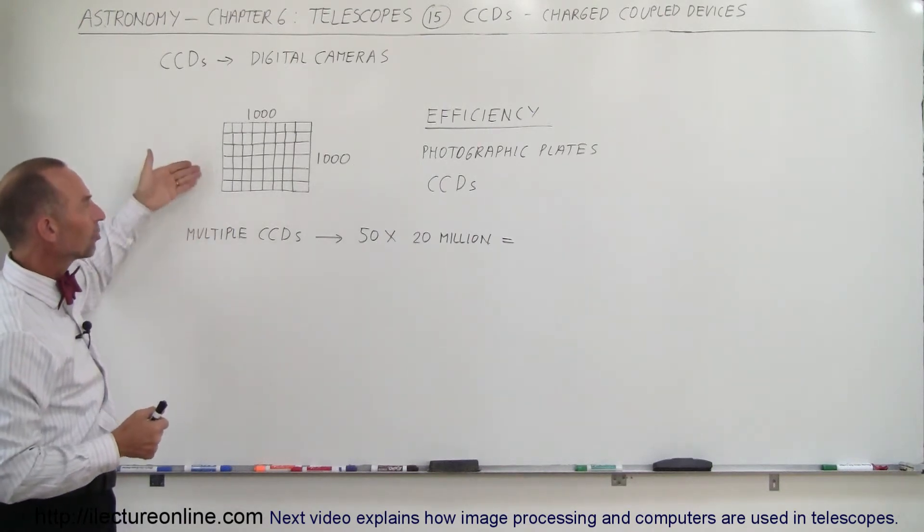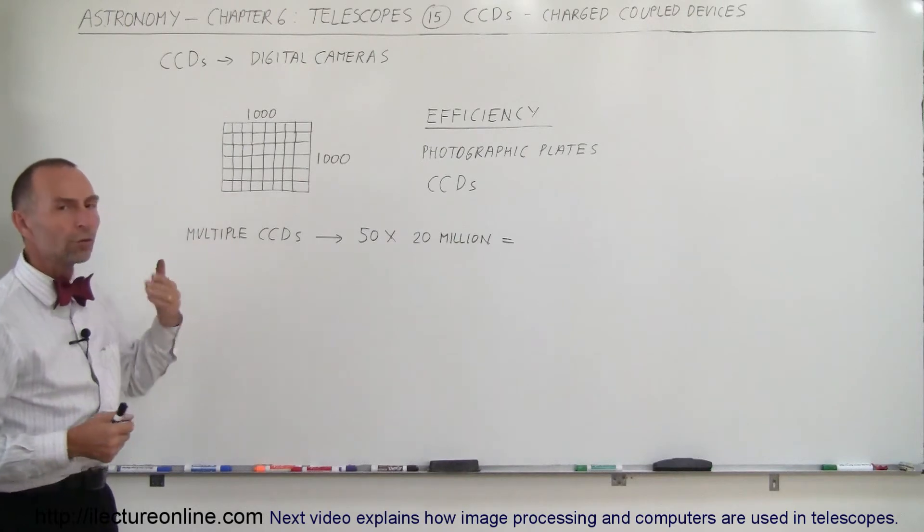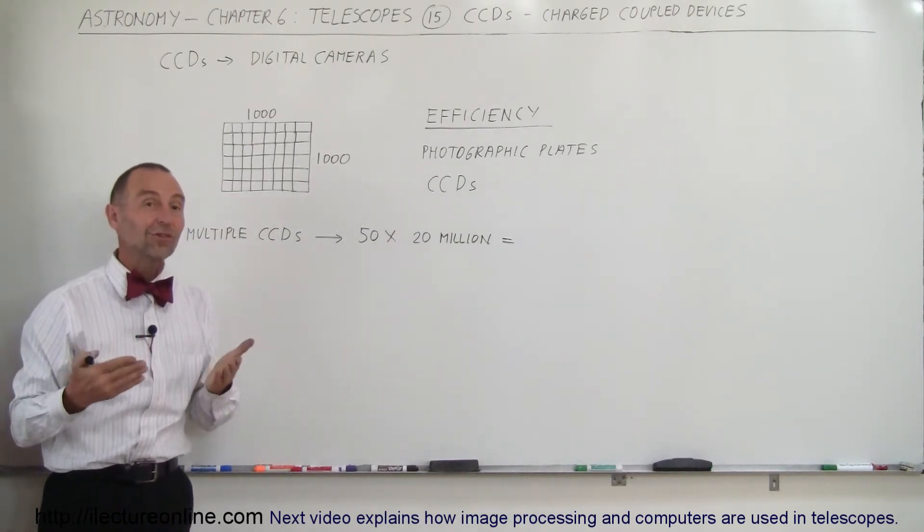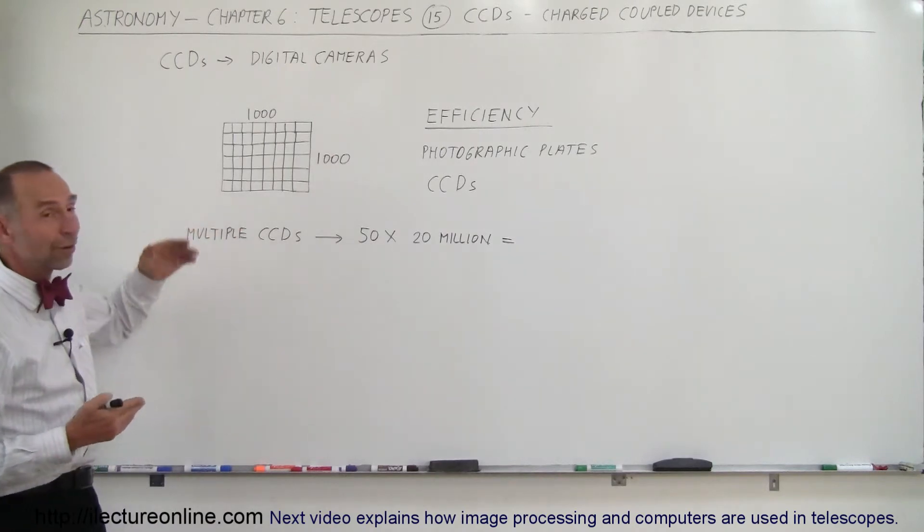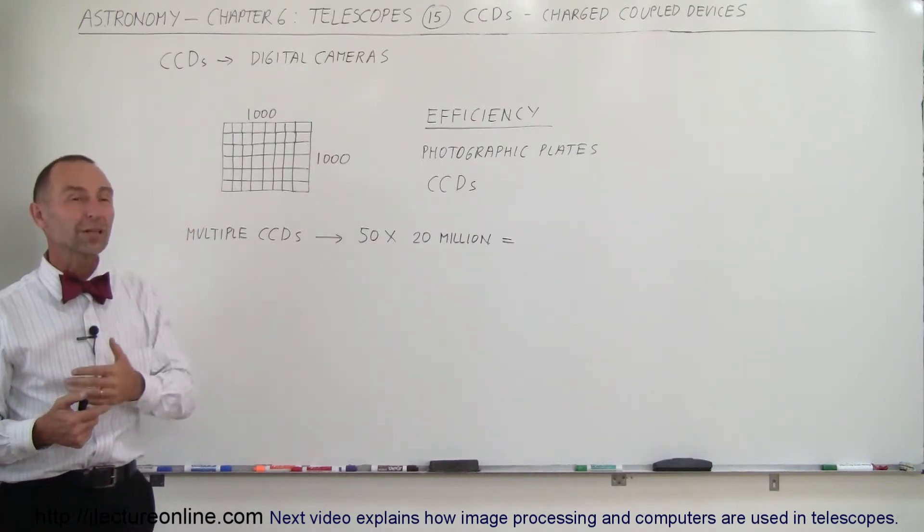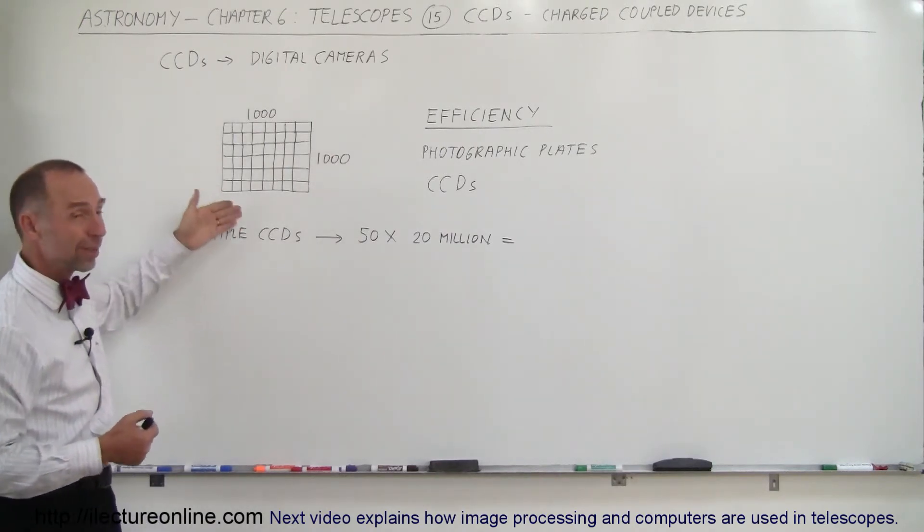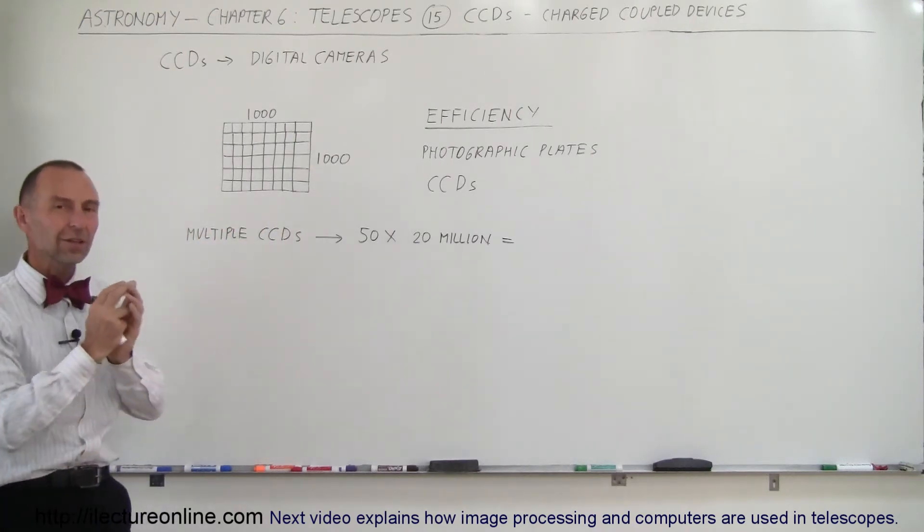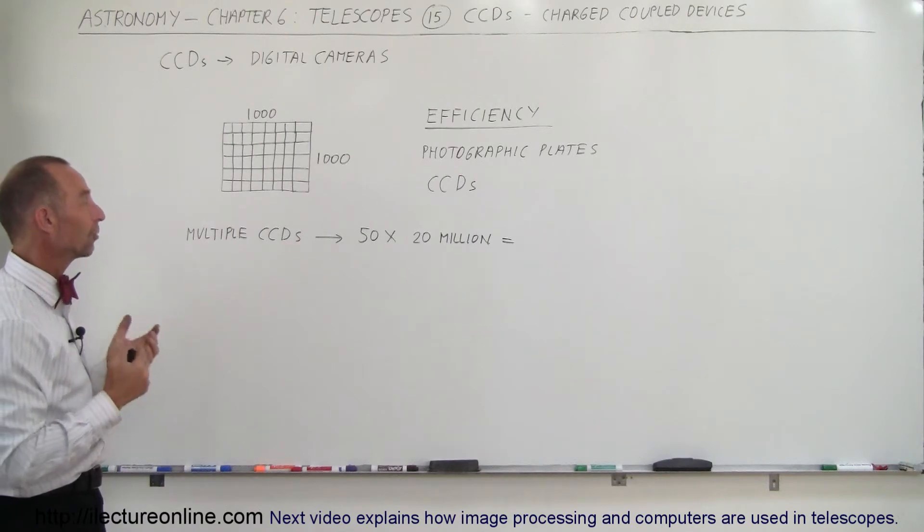We can take multiple pictures with the same CCD over and over again. Now typically in today's cell phones and digital cameras, the number of pixels is somewhere upwards about 10 to 12 million, so an array of 3,000 by 3,000 to 4,000 by 4,000 pixels for a single photographic image. That's absolutely amazing.